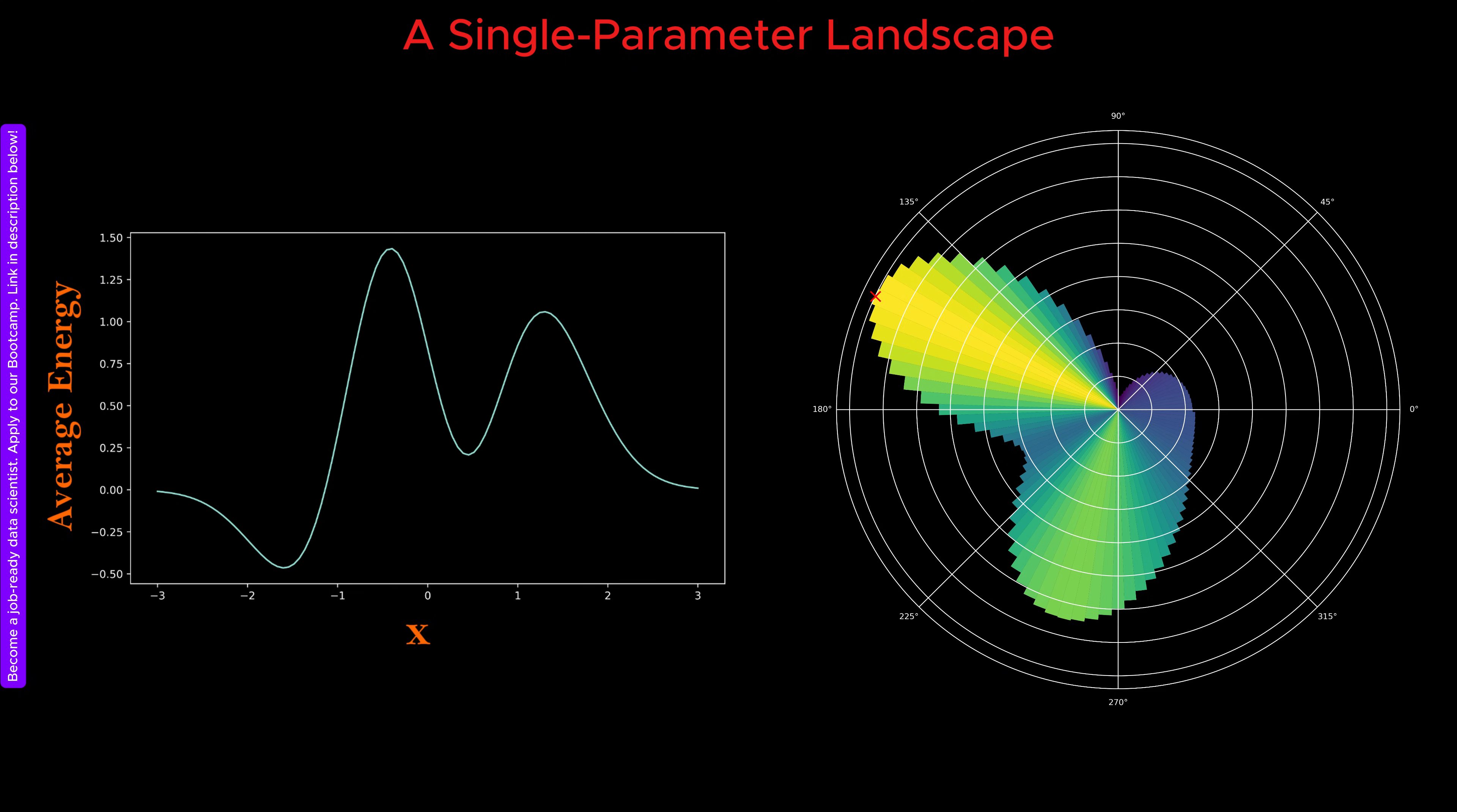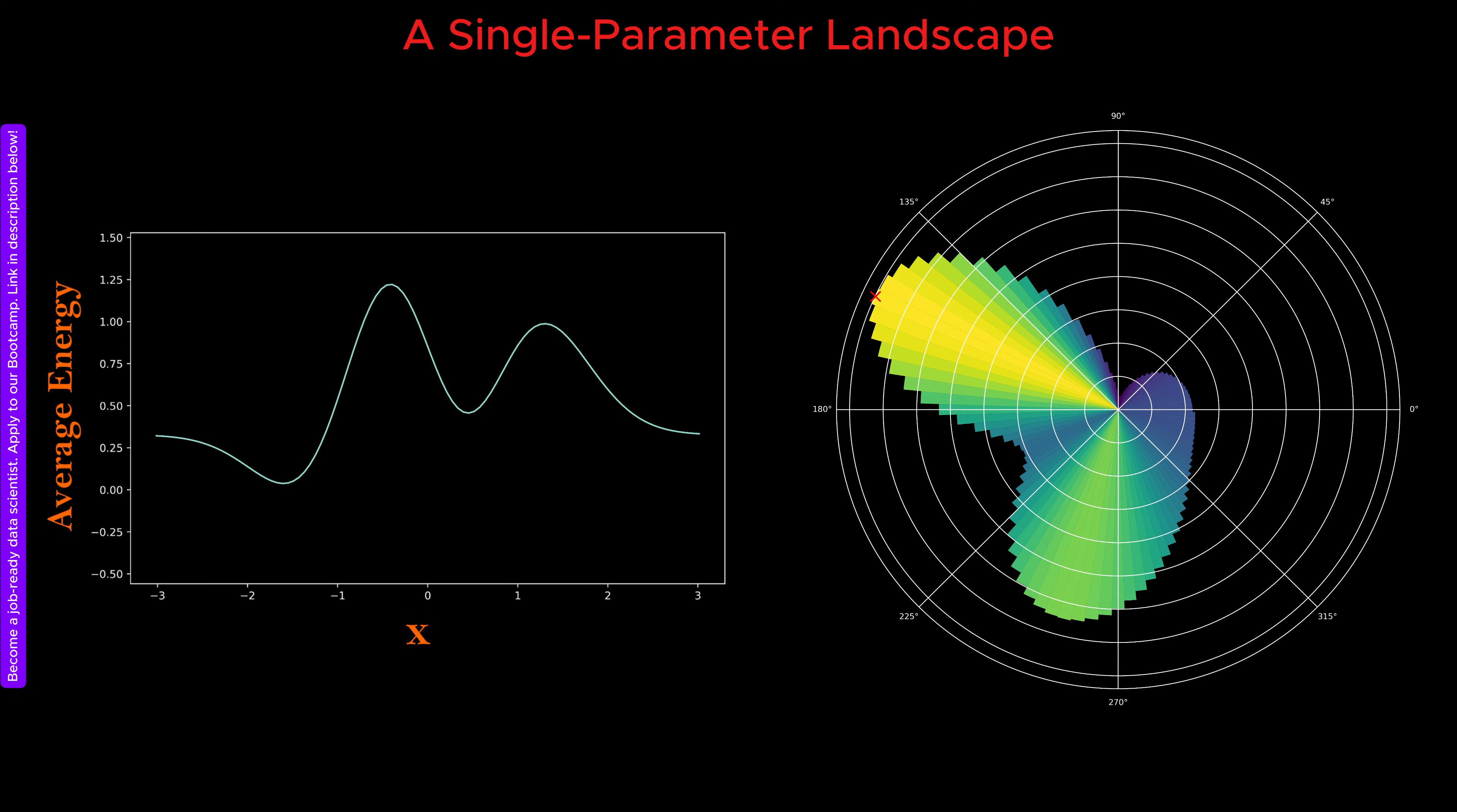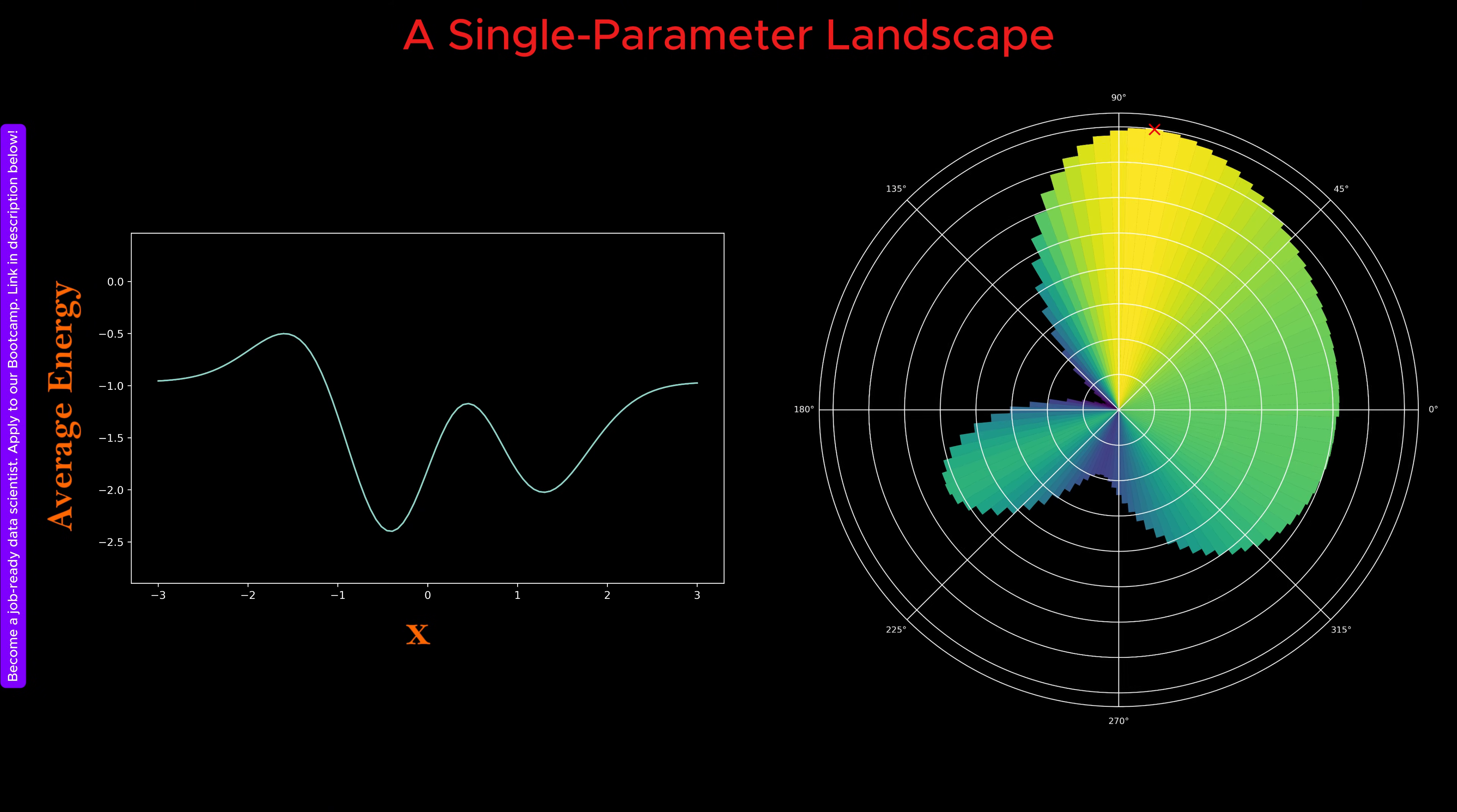To handle negative values of the function, we first shift the entire plot upward into the positive region. This is done by adding a constant value to all function values globally. This operation does not lose any information and does not change the structure of the landscape. However, even after this shift, the minima remain difficult to visualize because they are still clustered near the center with very small radii.